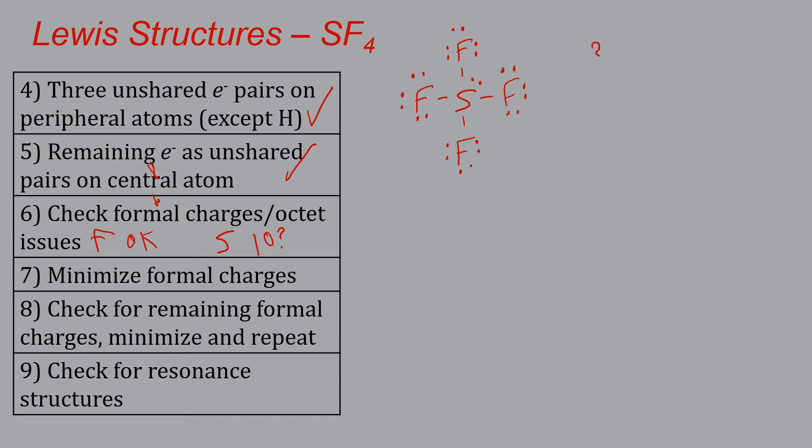So the octet rule really only applies to second row elements. So things like beryllium, boron, lithium, carbon, nitrogen, oxygen, fluorine, I think that's all of them, and neon, but neon doesn't really bond. So once you get to third row elements, like our friend sulfur here, the magic number is no longer eight, it can be as high as 18. So this is what's called an expanded octet. And third row elements or higher can do it.